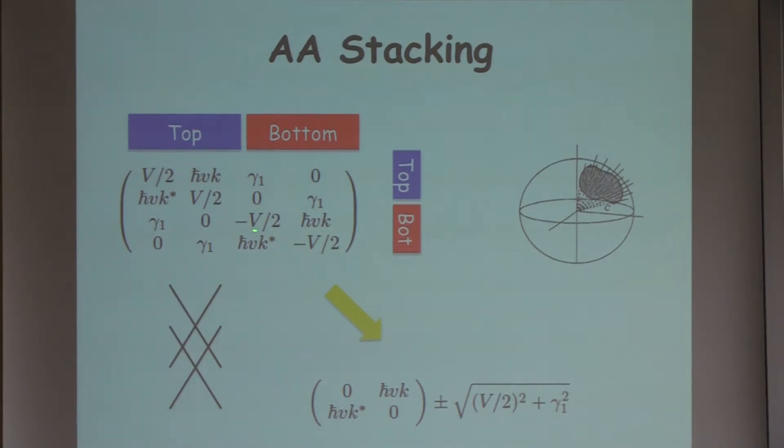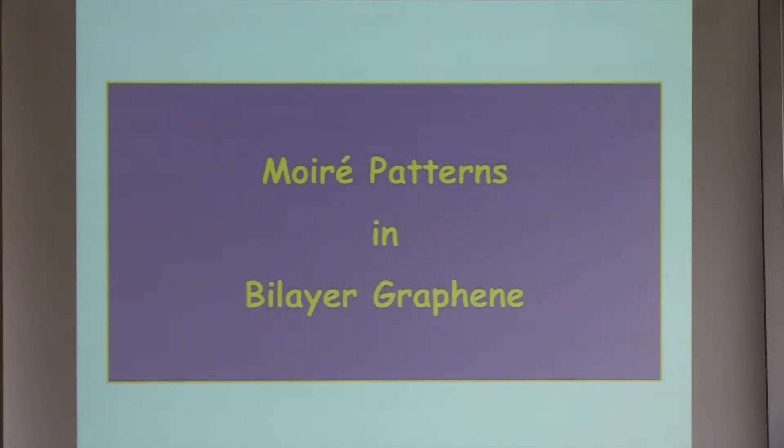Finally, let me mention the case of AA stacking. This is two honeycombs right on top of each other. Then the tunneling between the layers is sublattice independent in this case. It turns out that the sublattice dependence and the layer dependence in this Hamiltonian separate, and you end up with just two Dirac cones. So if you have AA stacking, a displacement field will not make an energy gap.